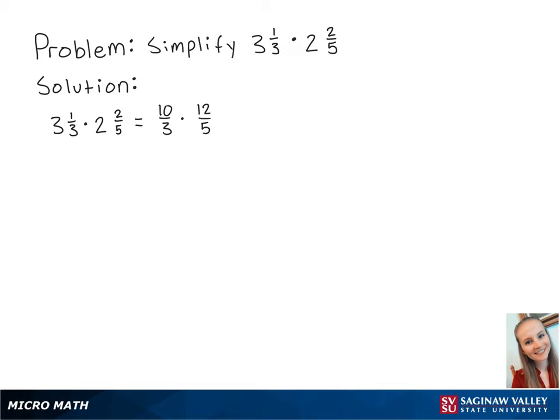When we multiply two fractions, we multiply the numerators and the denominators. We can do this by merging the fractions into 1. So this is equal to 10 times 12 over 3 times 5.